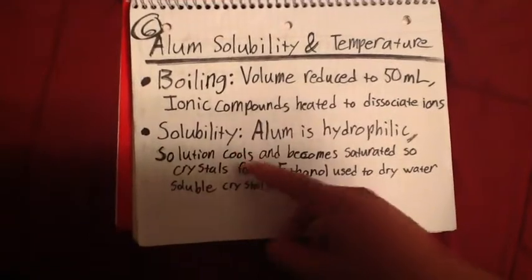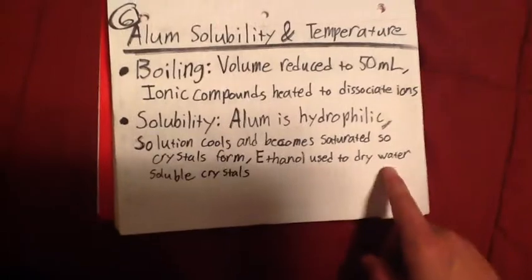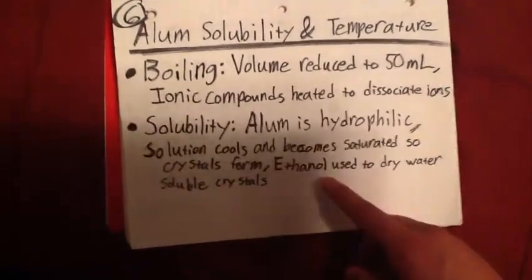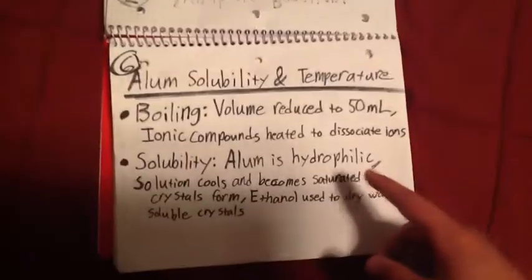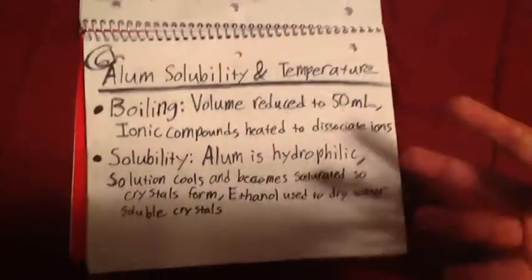Moving on to solubility, we know that alum is hydrophilic, so in the end we had to use ethanol to dry the water-soluble crystals as they were washed. Also, because of the reduction in space and volume, the solution became more saturated.